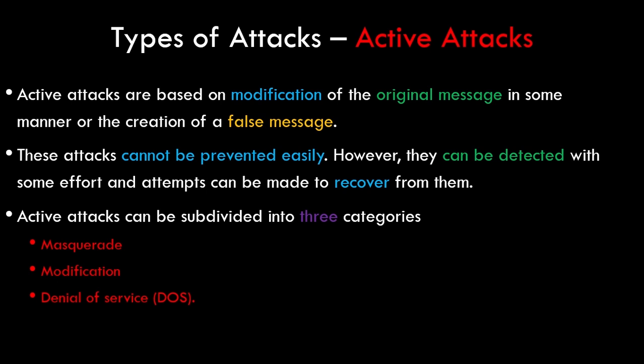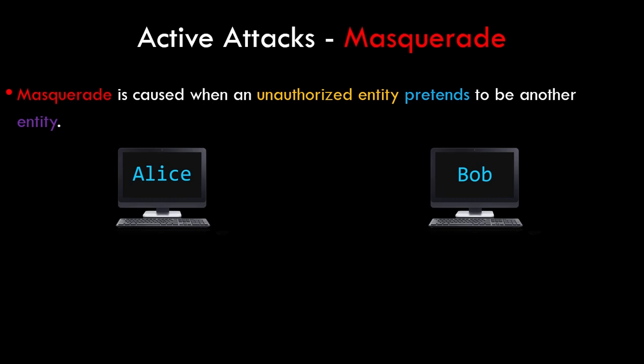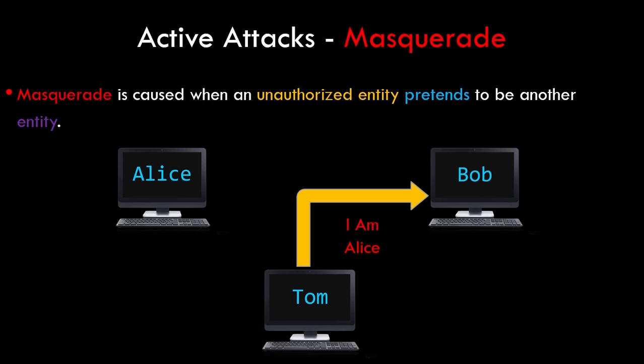Active attacks are subdivided into three types: masquerade attacks, modification attacks, and denial of service attacks. Masquerade is caused when an unauthorized entity pretends to be another entity. In this example, Alice and Bob are legitimate users — authorized communication should happen between them. But Tom masquerades or disguises himself as Alice and communicates with Bob on her behalf. Due to poor authentication, Bob doesn't know who he's talking to. If Bob releases confidential information like his account number and password, Tom — and not Alice — gets access to those credentials.